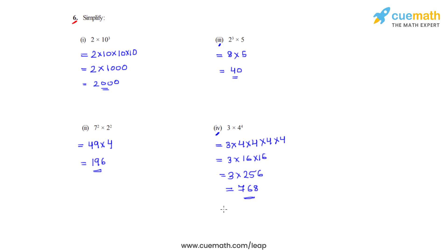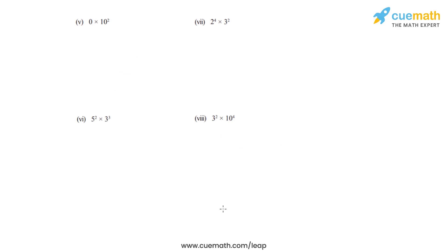Now we will go on to the next four bits. In the fifth bit we have 0 times 10 raised to 2. We know that 0 when multiplied by anything gives the product as 0, so we can straight away write it as 0.